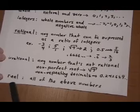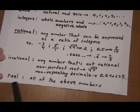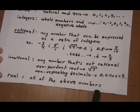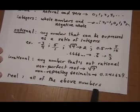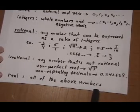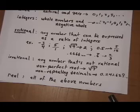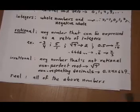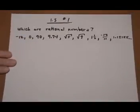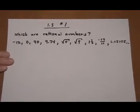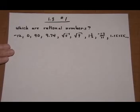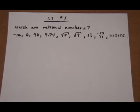The real numbers are all of the above types — so all rational and irrational numbers make up the real number system. Alright, so let's keep those definitions in mind and pick out the rational numbers from this list. What we want to do here is pick out any number that could be written as a ratio of integers.